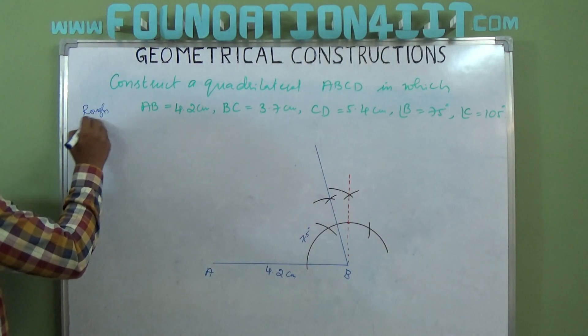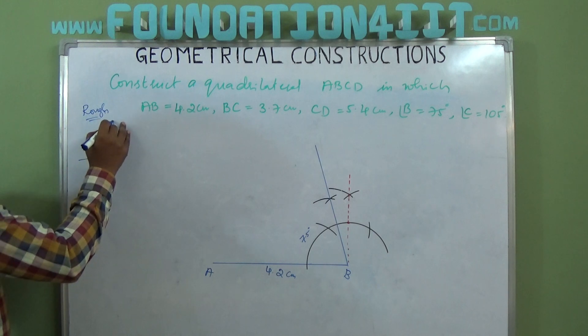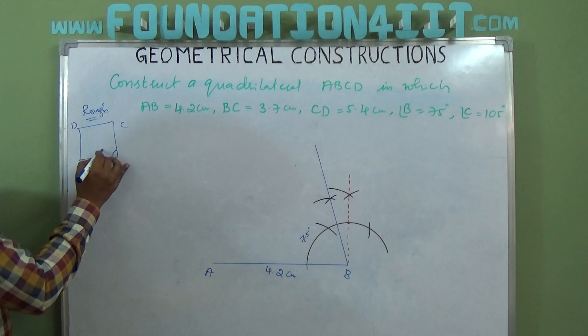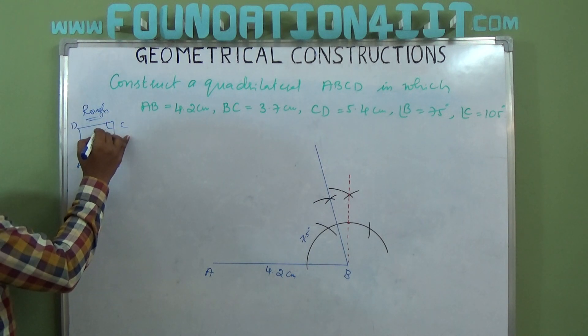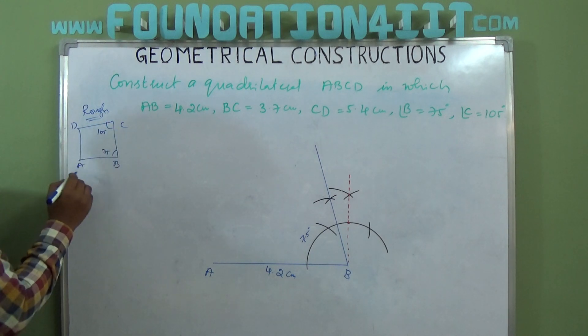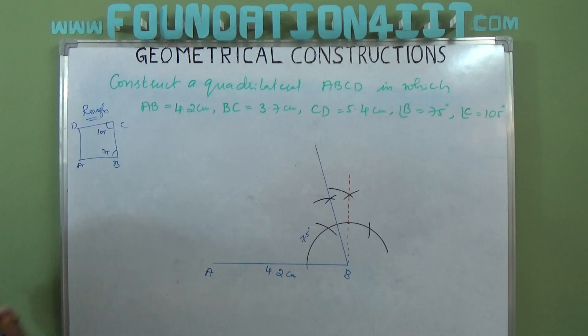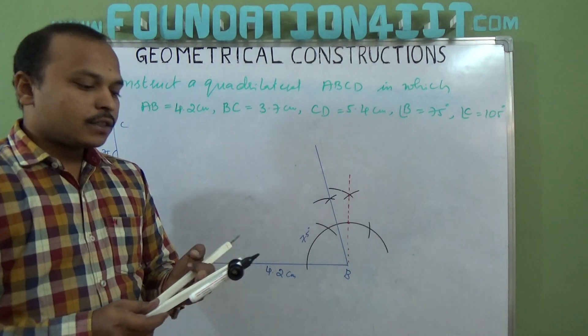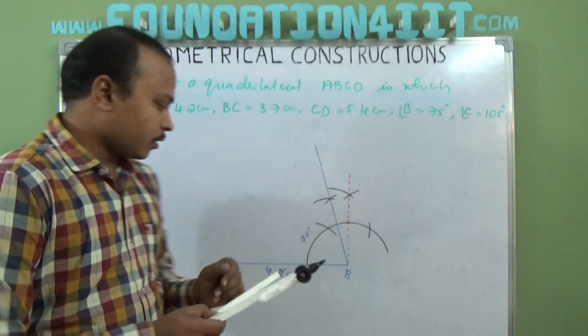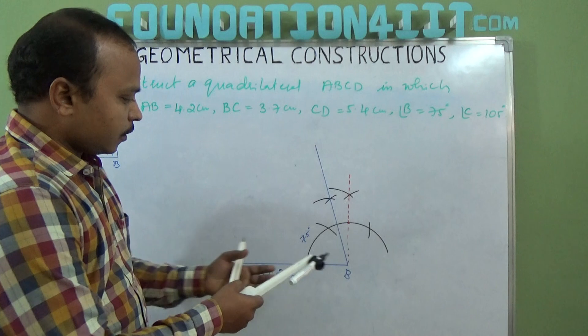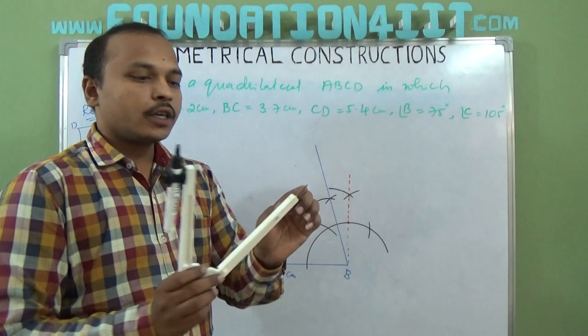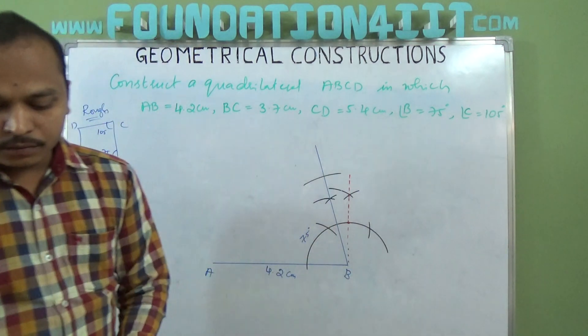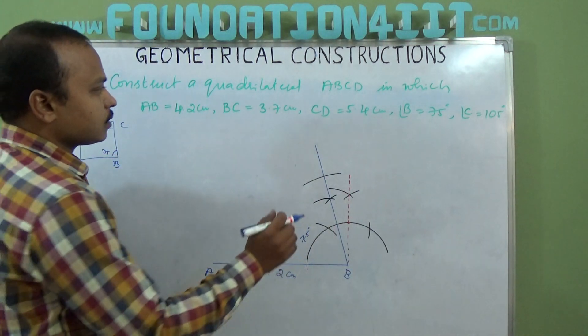Actually rough diagram we need to draw first of all. If you take ABCD, so we know angle B is 75 degrees and angle C is 105 degrees. So from B to C we can cut arc. B to C is 3.7 centimeters, so take 3.7 and cut this arc. Where it touches, that is the C.